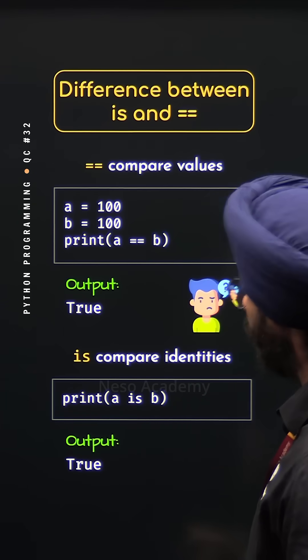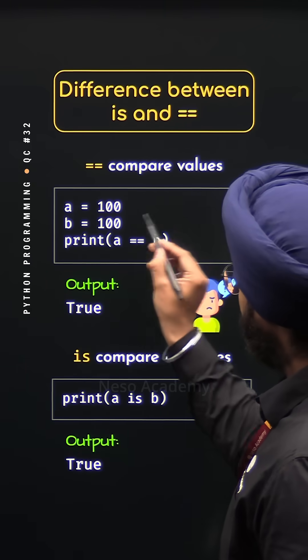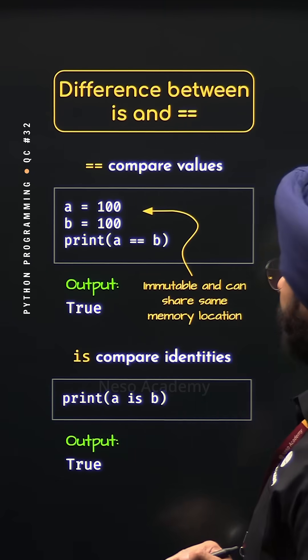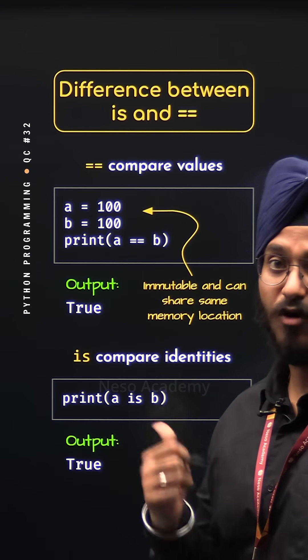But why are we getting true in this case? These numbers are mutable in nature and hence, they can share same memory location. This is done by Python for performance improvement.